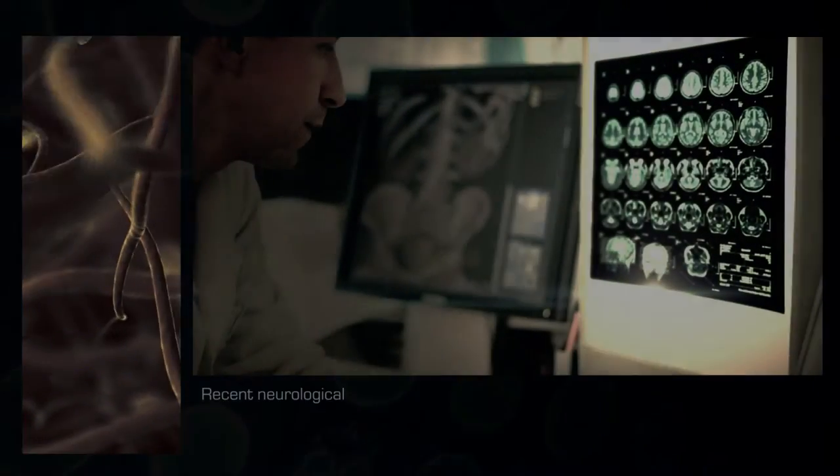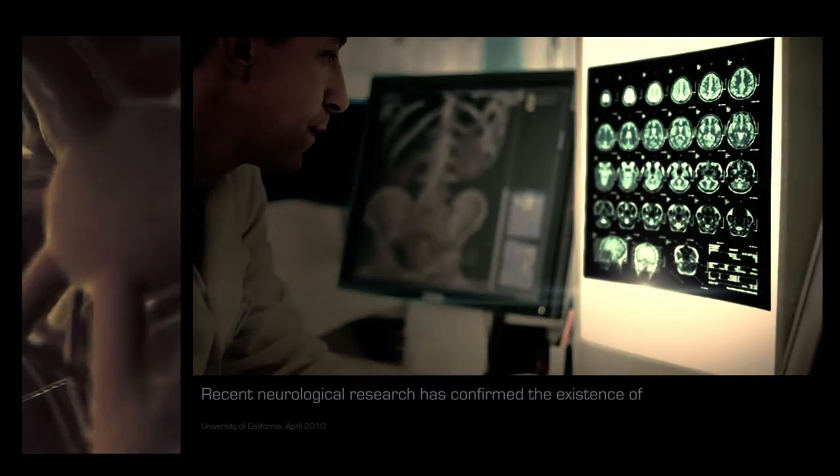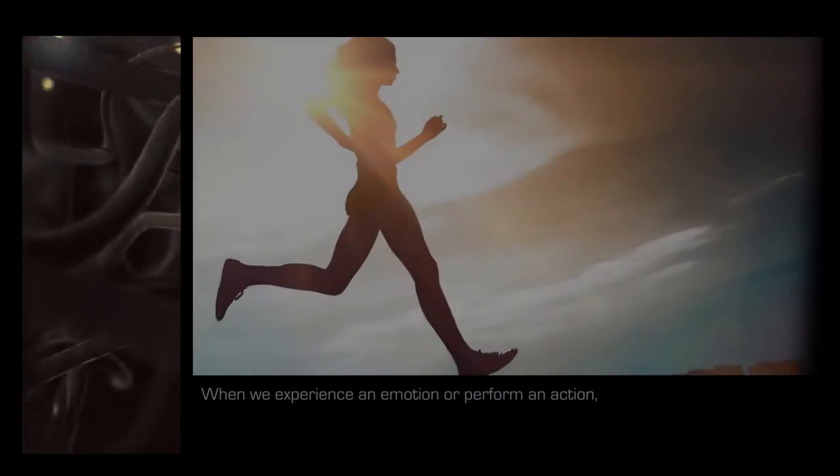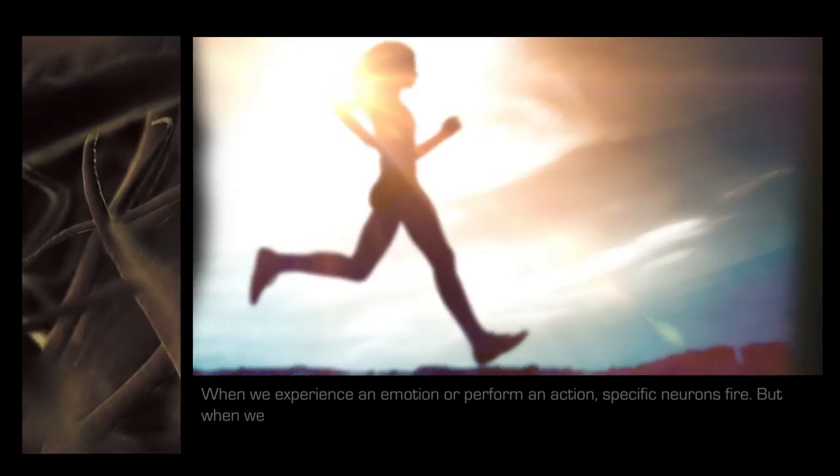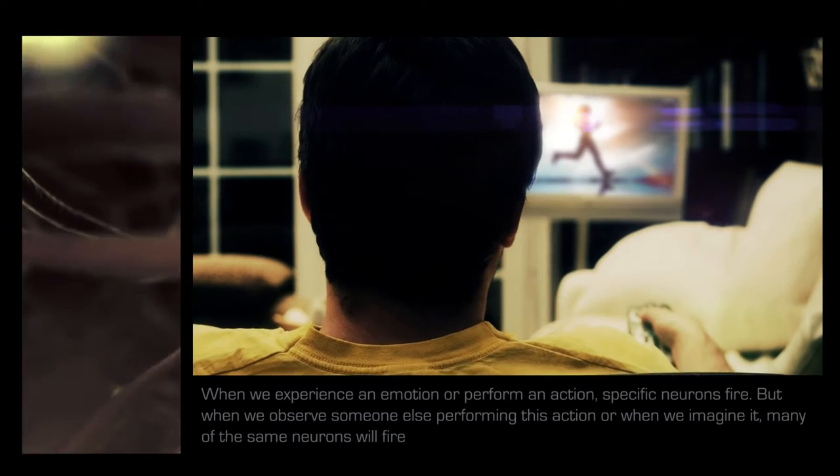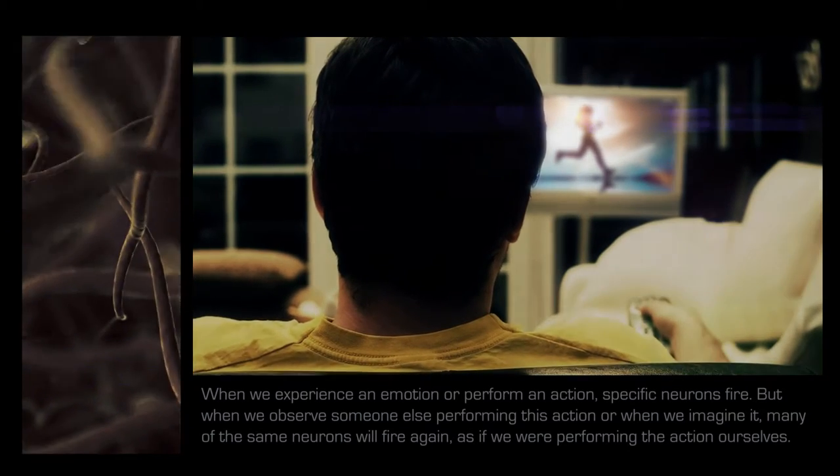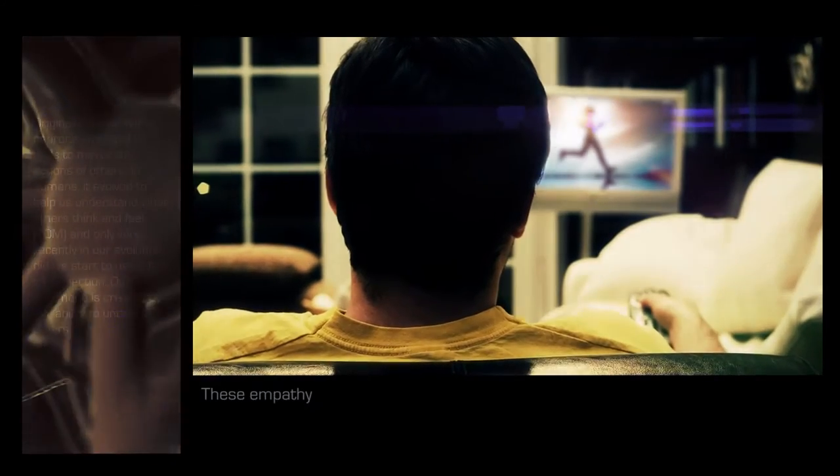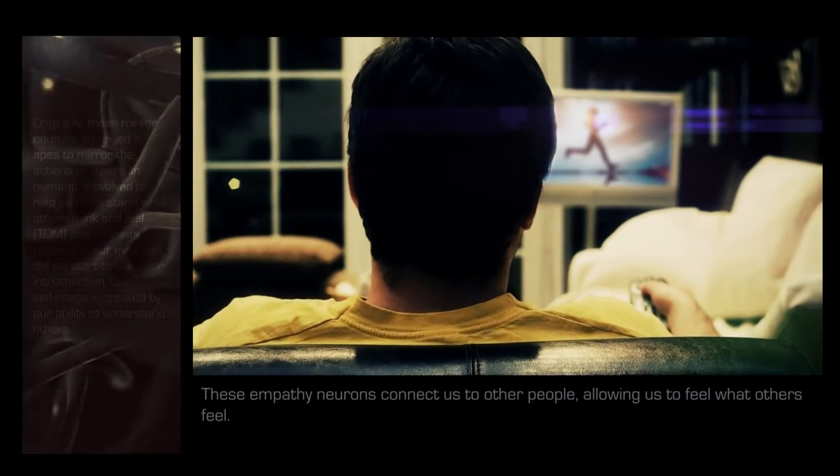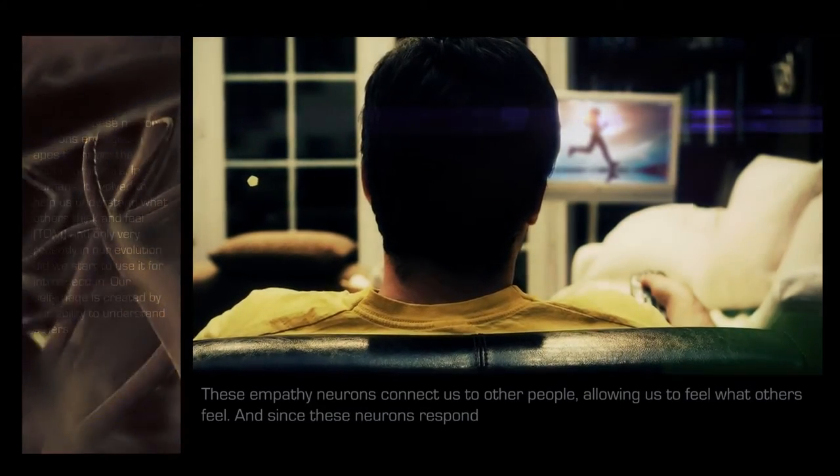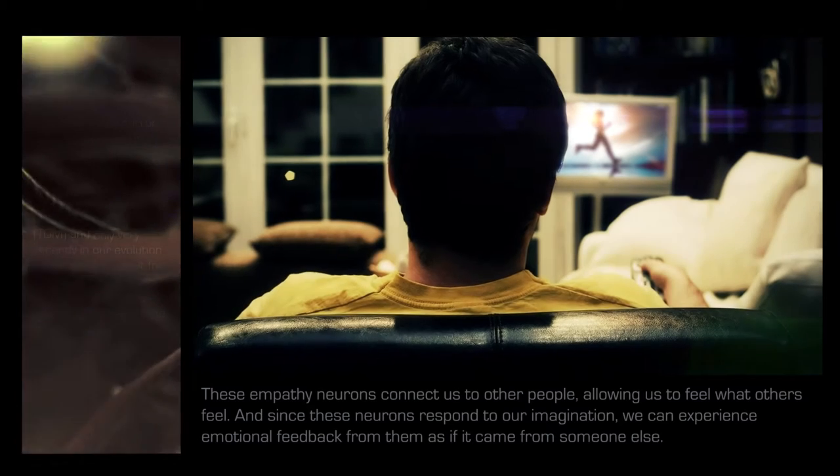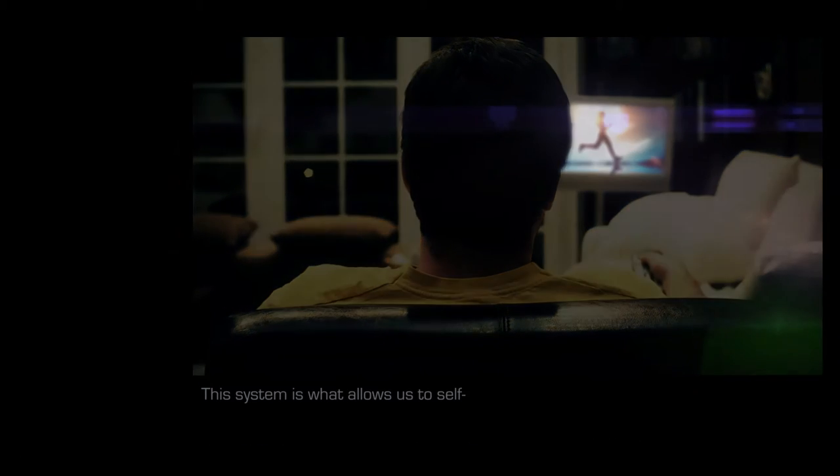Empathy. Recent neurological research has confirmed the existence of empathetic mirror neurons. When we experience an emotion or perform an action, specific neurons fire. But when we observe someone else performing this action, or when we imagine it, many of the same neurons will fire again, as if we were performing the action ourselves. These empathy neurons connect us to other people, allowing us to feel what others feel. And since these neurons respond to our imagination, we can experience emotional feedback from them as if it came from someone else. This system is what allows us to self-reflect.